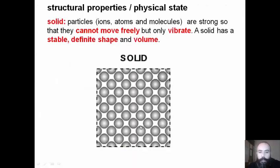The physical state of building products can be solid, in which particles are strong so that they cannot move freely but only vibrate. A solid has a stable, definite shape and volume.